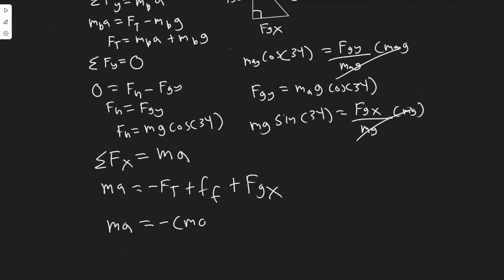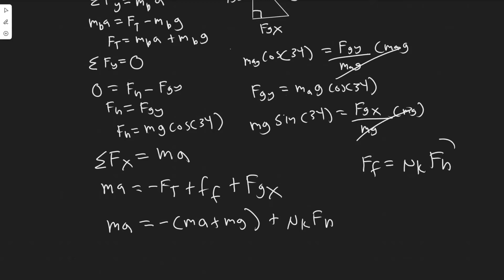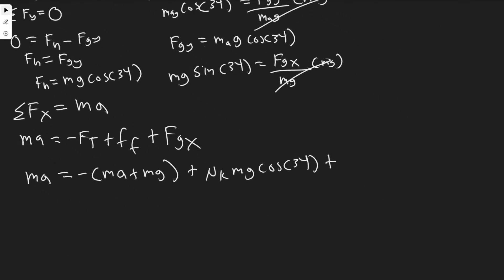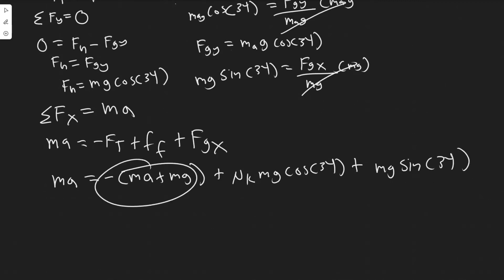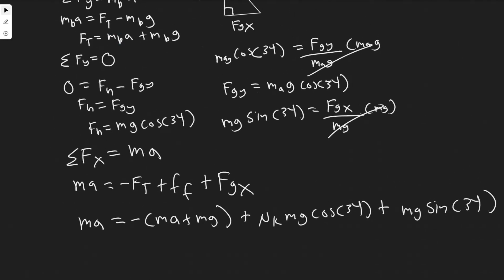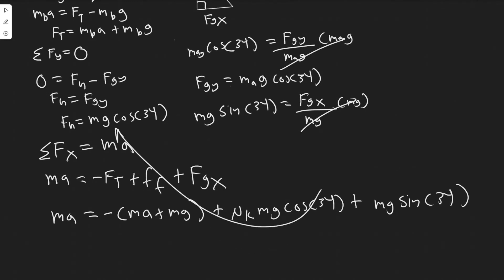Substituting into the x-equation: m·a = −FT + μk·FN + FGx. Replacing FT = m·a + mg, FN = mg·cos(34°), and FGx = mg·sin(34°), we get: m·a = −(m·a + mg) + μk·mg·cos(34°) + mg·sin(34°).